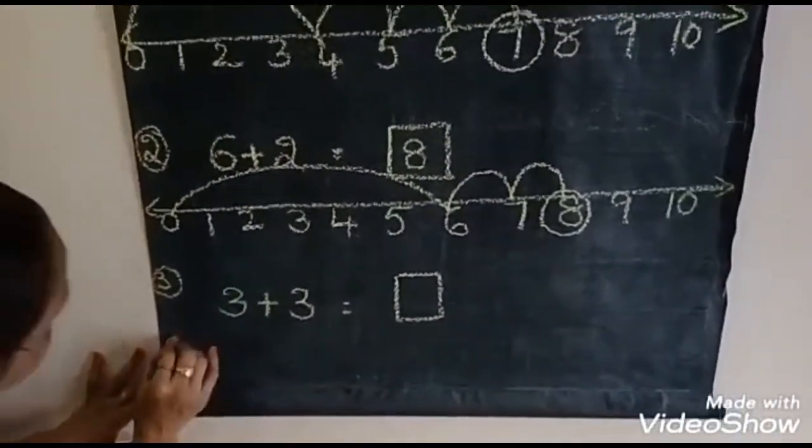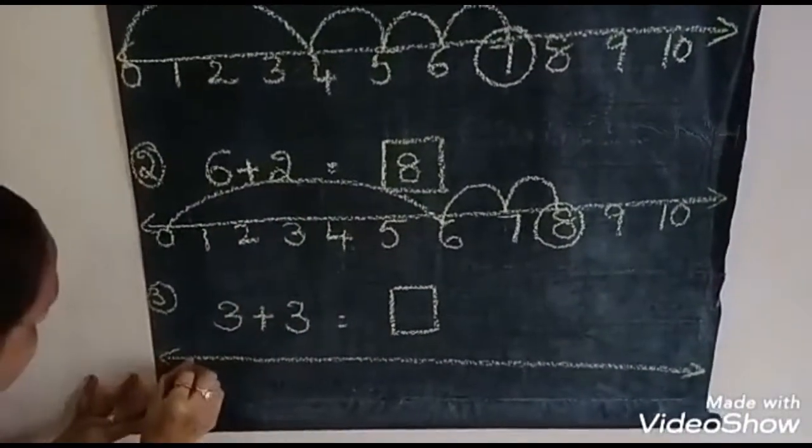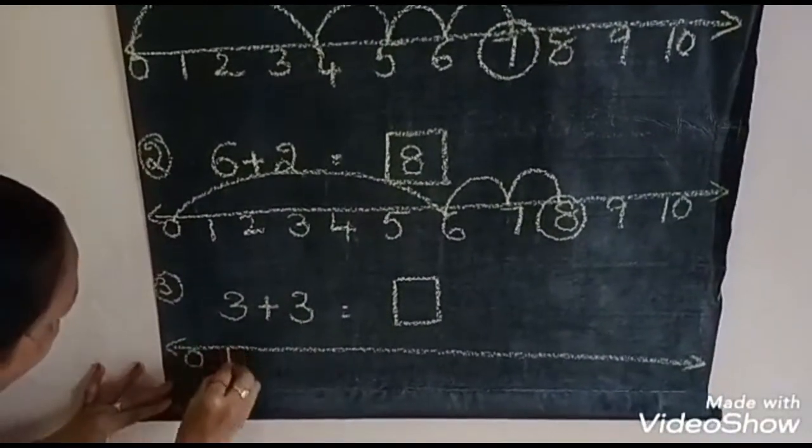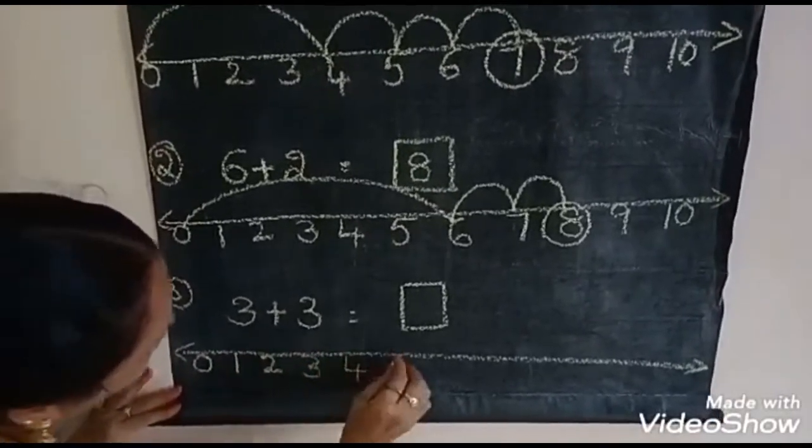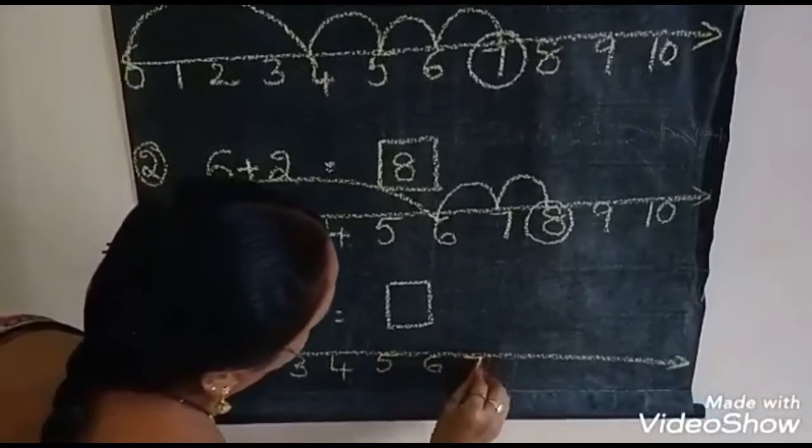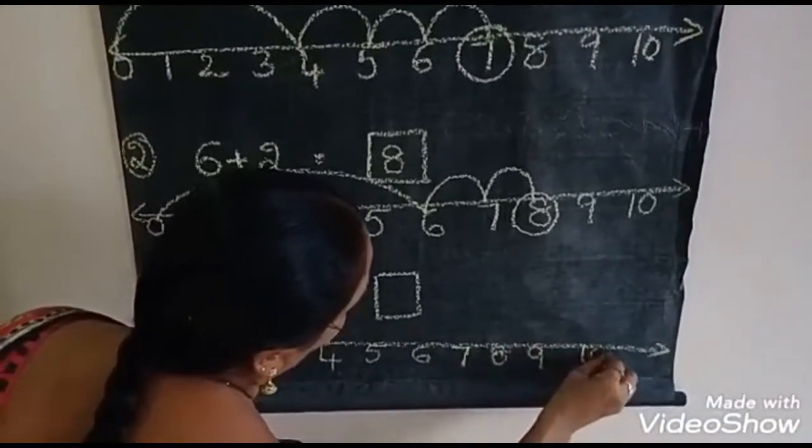Next. Again, draw one scale here also. So, see children. 0, 1, 2, 3, 4, 5, 6, 7, 8, 9, 10.